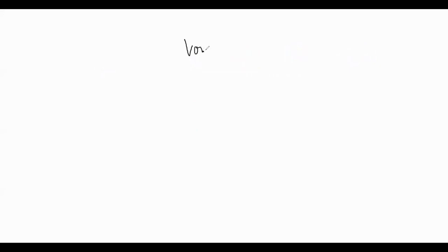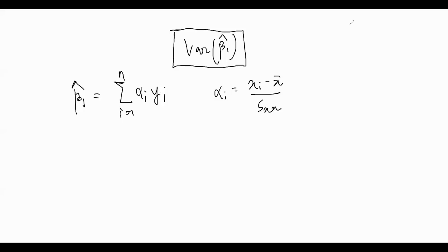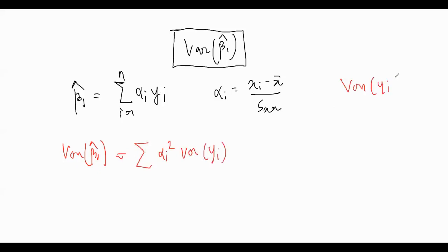Let's go to the next slide and find variance of β̂₁. Remember that β̂₁ equals summation of αᵢ·yᵢ, where αᵢ equals (xᵢ minus x̄) divided by Sₓₓ. Since the yᵢ are independent — because the εᵢ are independent and their covariance is zero — variance of β̂₁ equals summation of αᵢ² times variance of yᵢ.